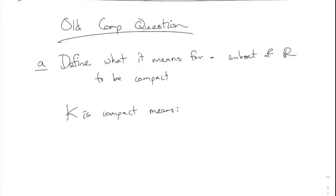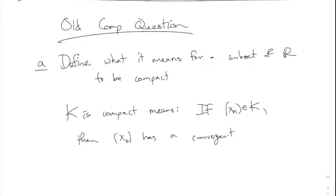You can make a sequence and then that sequence converges to a point into the set. Yes, so it means any sequence in the set has a convergent subsequence, and that subsequence converges to a point in the set. So if X_N is a sequence in K, then X_N has a convergent subsequence and the limit is in K. This is what compact means.